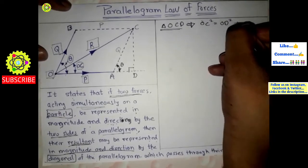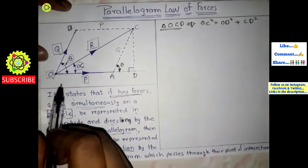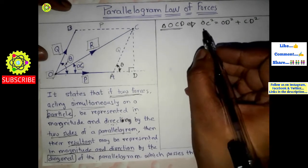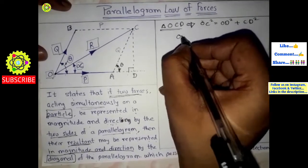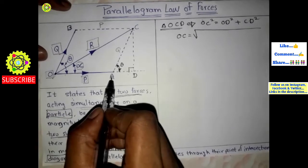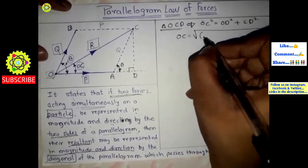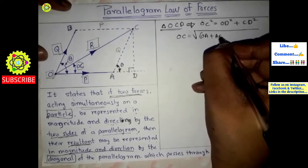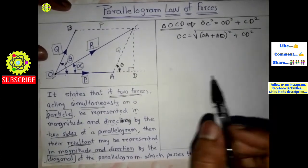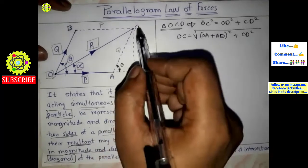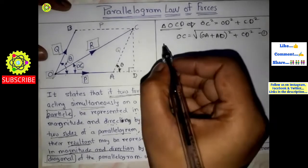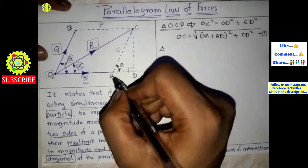Applying the Pythagoras theorem to triangle OCD: OC² = OD² + CD². So OC equals the square root of (OD² + CD²). Now OD equals OA plus AD, so this becomes the square root of (OA + AD)² + CD². We call this equation one. We will now find the values of AD and CD by considering triangle ACD.